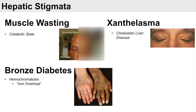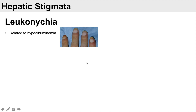Another hepatic stigmata is leukonychia, which is a whitening of the nail bed. Normally the nail bed is pink or red, but in these patients you see a whitening of the nail bed, and this is related to hypoalbuminemia.